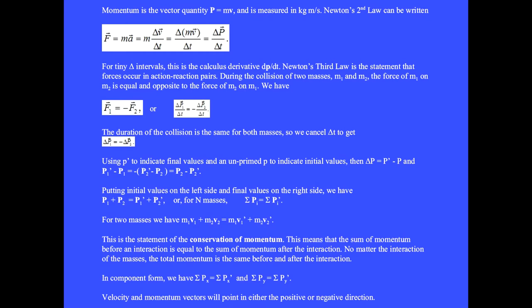In component form, the sum of the initial x-components of momentum equals the sum of the final x-components of momentum. And the sum of the initial y-components equals the sum of the final y-components, and likewise for z. Velocity and momentum vectors will point in either the positive or negative direction.